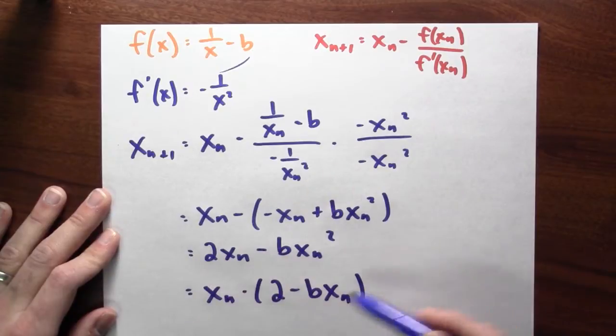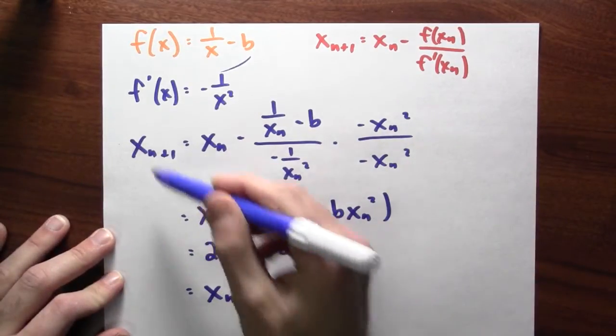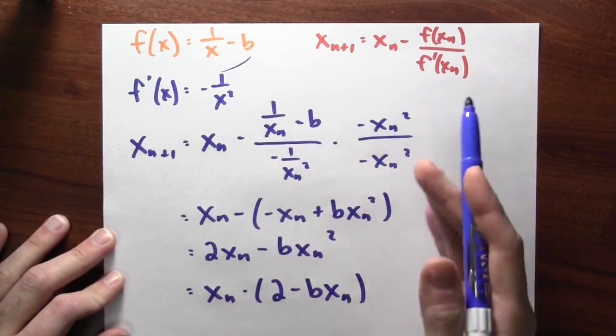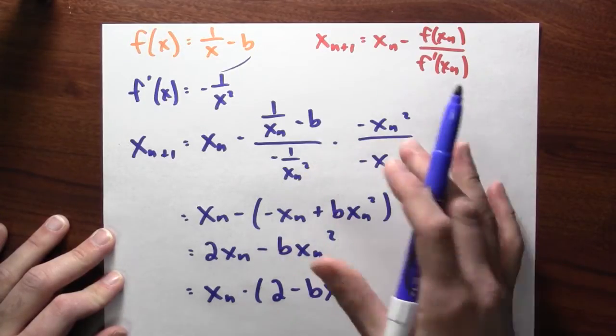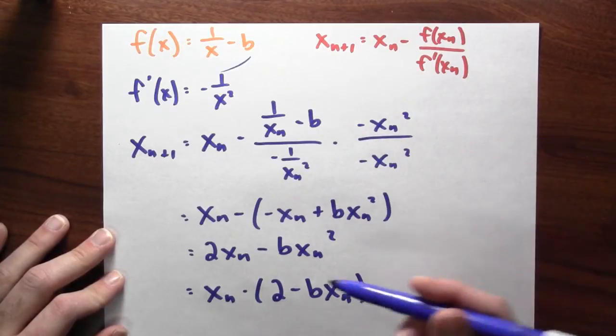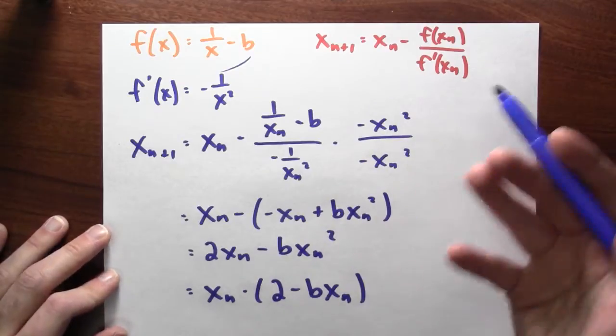And what I've got here now is an iterative formula that, at least when it works, applying this iterative formula is going to move me closer and closer to 1 over b. But this formula doesn't involve division. It only involves multiplying and subtracting. So this is a way to approximate 1 over b without ever dividing, right? Just multiplying and subtracting over and over again.